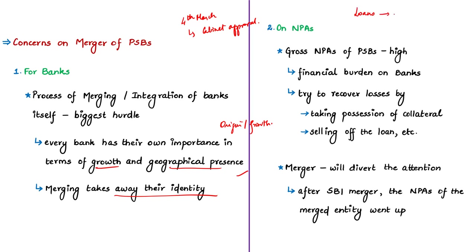Banks give loans and advances to borrowers. If the borrower makes regular payments, that loan is a standard asset. But if the borrower stops making interest or principal repayments for over 90 days, it becomes a non-performing asset. In recent years, the gross non-performing assets of public sector banks have increased to a larger extent, indicating that a significant proportion of bank assets have stopped generating income — decreasing profitability and ability to grant further loans.